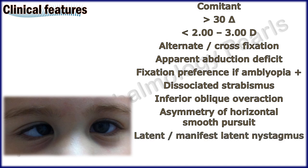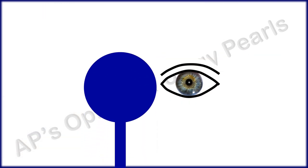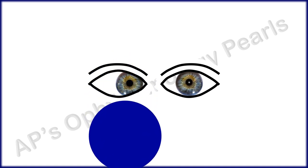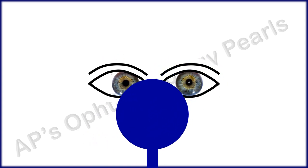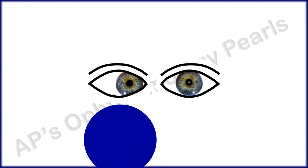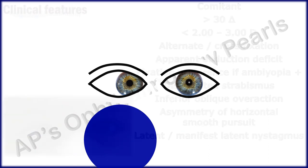Latent nystagmus is seen only when one eye is covered, and the fast phase beats towards the side of the fixing eye. This means the direction of the fast phase reverses according to which eye is covered. Manifest latent nystagmus is the same except that nystagmus is present with both eyes open, but the amplitude increases when one eye is covered.